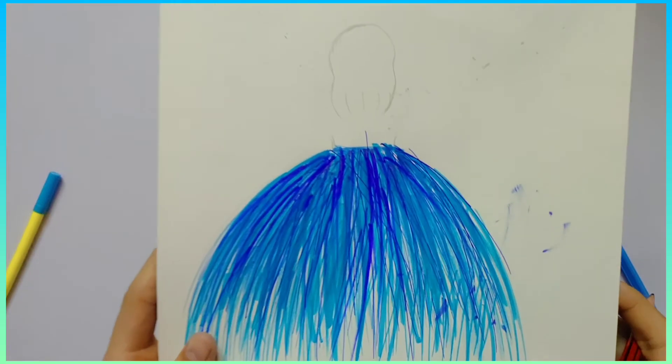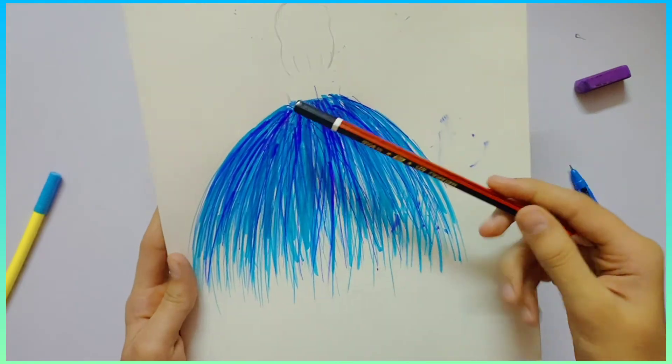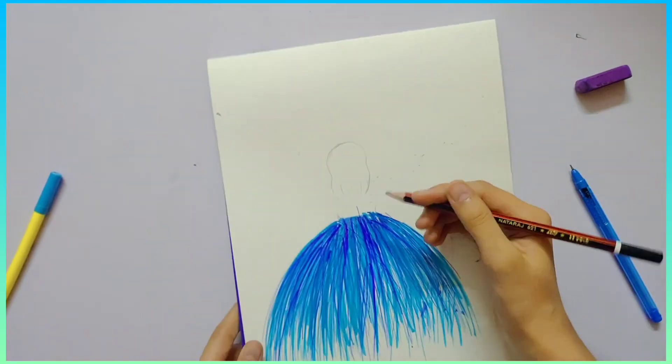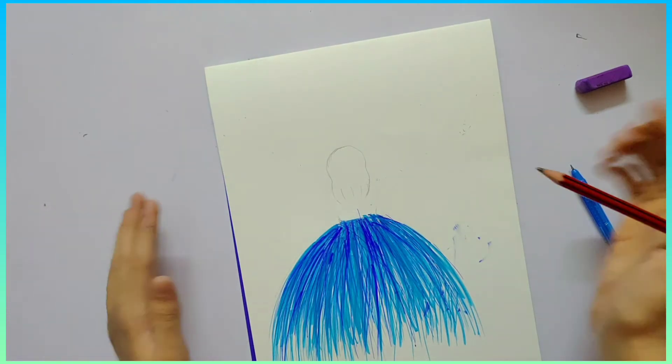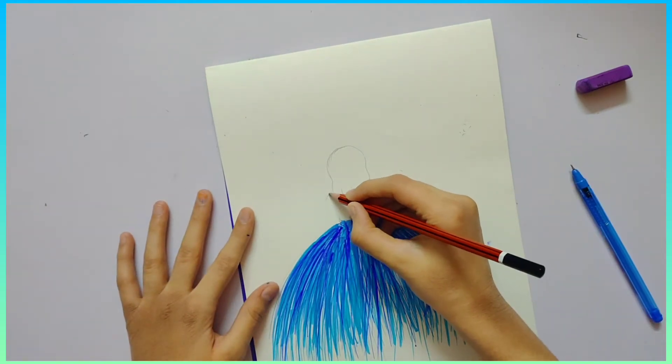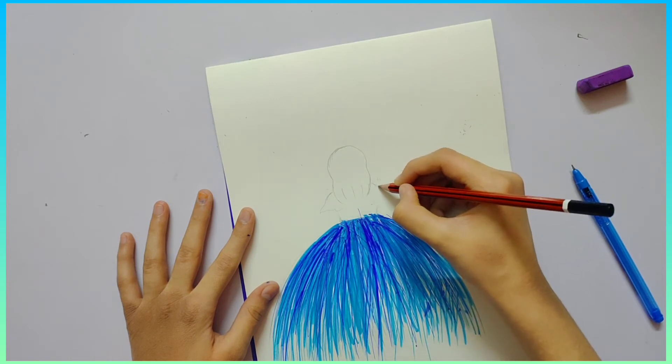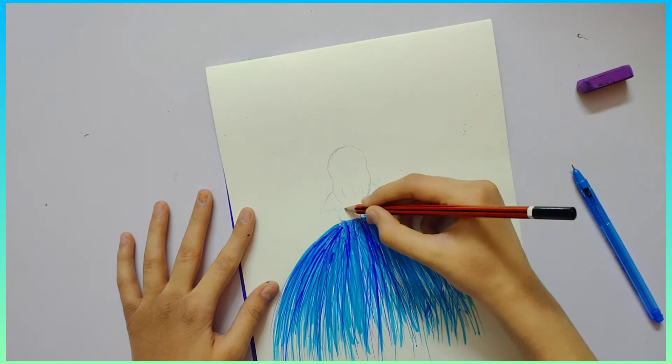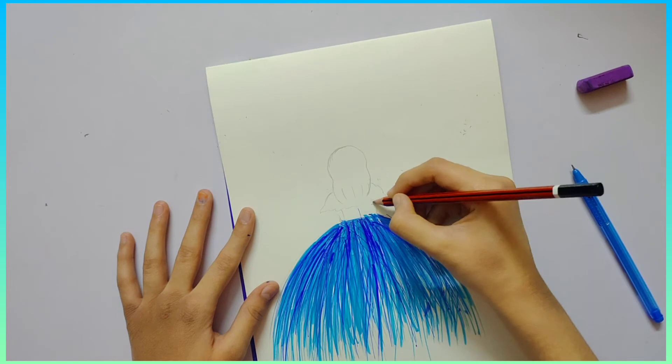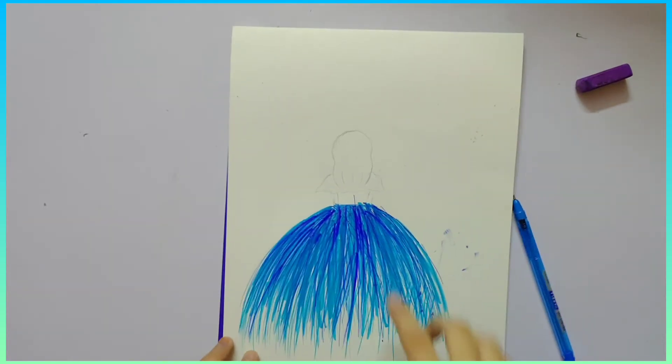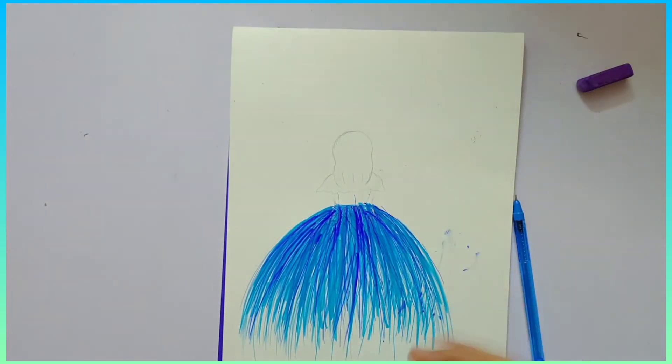We've finally completed our gown. You can just add more strokes or make it longer. Now we are going to make a type of design on the sleeves. You can color this spot with any color of your choice, like light blue or dark blue. Let's do it with light blue.